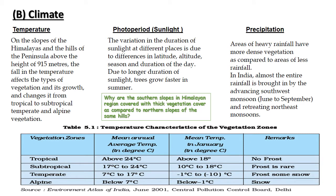The next factor is climate, which includes temperature, photoperiod (sunlight), and precipitation. Temperature plays a major role in determining the types of vegetation because other factors like humidity and precipitation also depend on temperature. You will find evergreen forests near the equator, or coniferous forests in the upper regions of the Himalayas where the temperature is cold.